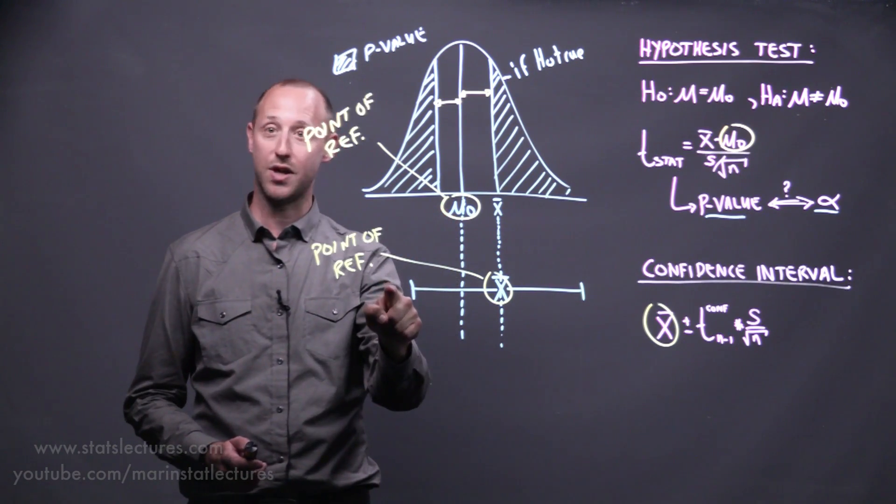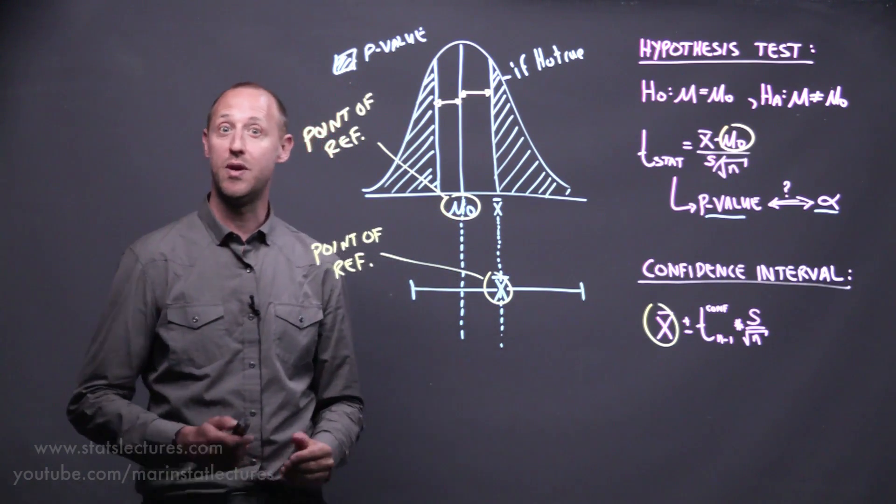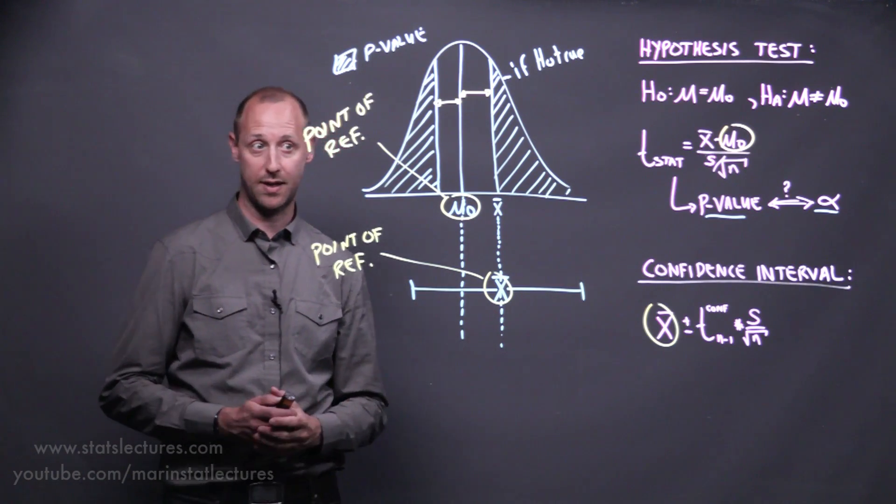If the null hypothesized value was outside of the confidence interval, the p-value is going to end up being less than 5%.